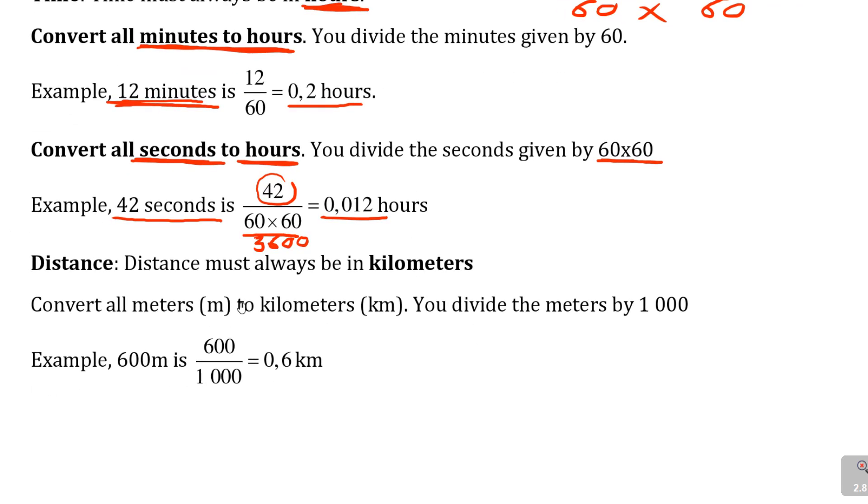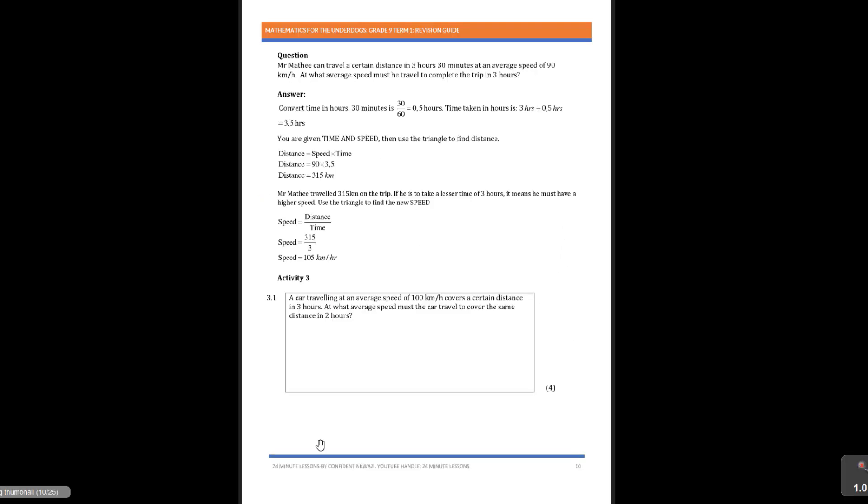The other one is distance. Distance must always be in kilometers. Why? Because the speed at the end will be in kilometers per hour. How do you convert meters to kilometers? You simply divide by 1000 because one kilometer equals 1000 meters. For example, if you run 600 meters, you take the 600, you divide by 1000, which is 0.6 kilometers. Very important conversions.